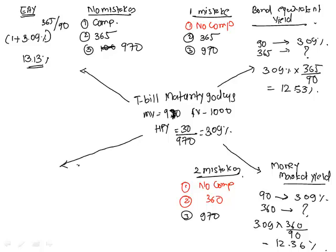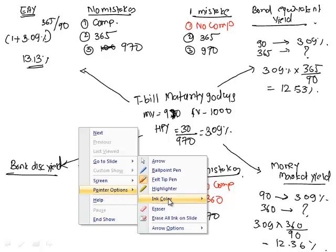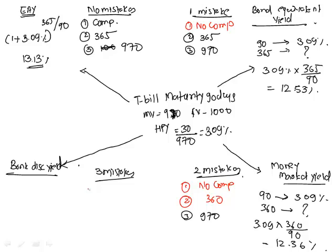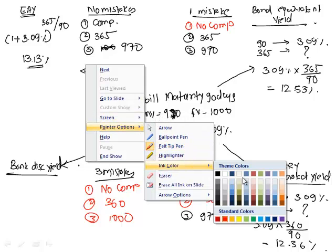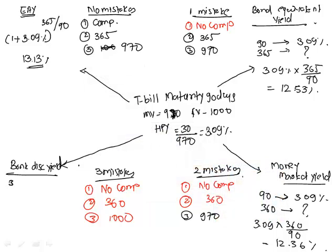Now the last yield is bank discount yield, and in bank discount yield we make all three mistakes. One easy way to remember this is that the bank makes the maximum mistakes. Mistake one: no compounding. Mistake two: 360 days. Mistake three: we keep the denominator as face value, not investment value. So we have earned 30 on 1000, which makes it 3 percent. For 90 days, 3 percent. How much for 360 days? 3 percent times 90 divided by 360 equals 12 percent.